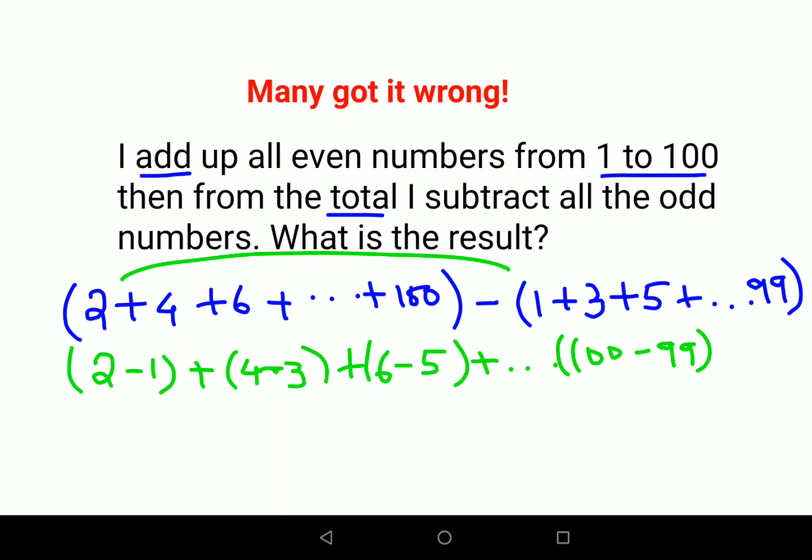So now all of these, how many pairs will happen? See here, there are 50 pairs of 50 even numbers and 50 odd numbers. So when you subtract these are basically 50 clubbings.